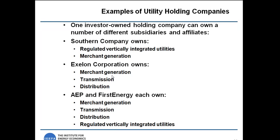Examples of holding companies include the Southern Company, which owns several vertically integrated companies and also owns Southern Power, a merchant generation company. Exelon Corporation owns merchant generation, transmission, and distribution companies. American Electric Power and FirstEnergy own generation, transmission, distribution, as well as vertically integrated utilities. This is a relatively new phenomenon — a result of deregulation and the repeal of the Public Utility Holding Company Act in 2005, which had placed limits on utility holding company structures and restricted the types of mergers that could take place.